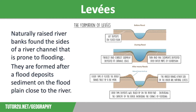Let's firstly think about how levees are formed. Levees are naturally raised riverbanks found at the side of the river channel that is prone to flooding. They are formed after a flood deposits sediment on the floodplain close to the river. As the water spills out across the land, its velocity is reduced because of friction, which leads to deposition. The heavier sediment is deposited close to the river channel, with smaller particles deposited further away, as you can see in the diagram on the screen.